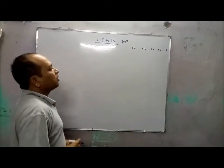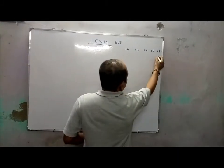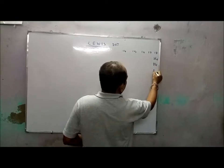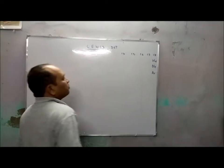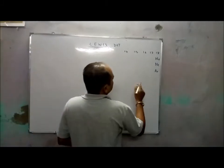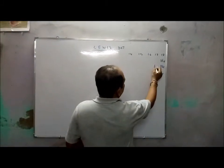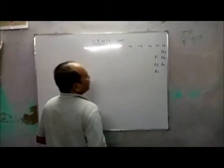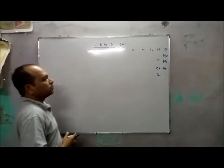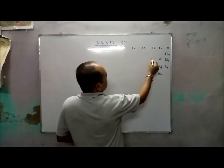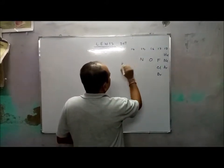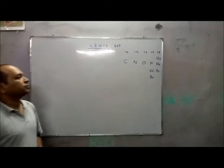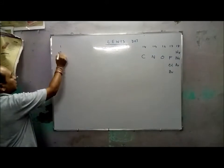Group 18 contains the noble gases: helium, neon, argon, and so on. Group 17 is the halogen group, so it contains chlorine, bromine. Group 16 contains oxygen, then nitrogen, and group 14 contains carbon. Group 1 contains the alkali metals.